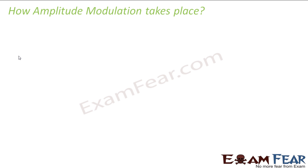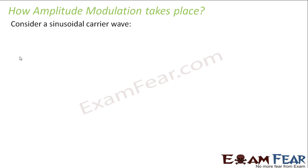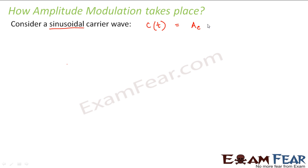So let us see how amplitude modulation takes place. We will see the mathematical aspect of it. So what do we need for amplitude modulation? We need a carrier wave. Let us suppose we are considering a sinusoidal carrier wave. So how do we denote it? The signal is denoted as C of t, equal to AC sine omega-c t, where omega-c is the angular frequency of the carrier wave.